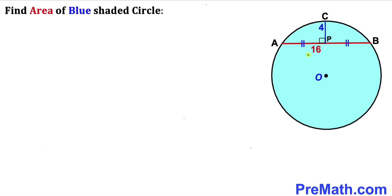Welcome to PreMath. In this video we have got a line segment CP which is a perpendicular bisector of another chord AB, as you can see in this diagram. The length of CP is 4 units, the length of chord AB is 16 units, and O is the center of this blue circle. We are going to calculate the area of this blue shaded circle.